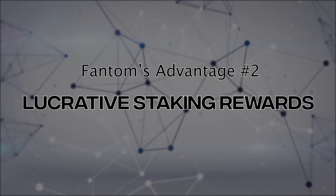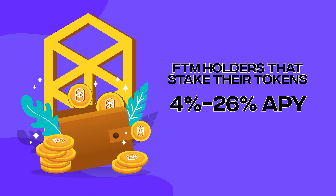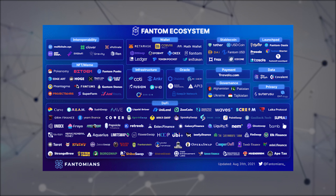They have managed to dial down transaction finality to around one second, making it one of the fastest confirmation layer platforms available. Advantage number two: for participating in node validation, FTM holders that stake their tokens can receive rewards ranging from 4% to 26% APY. As an added bonus, FTM's staking mechanism is non-custodial, meaning you don't have to hand over your tokens — they remain in your wallet the whole time.